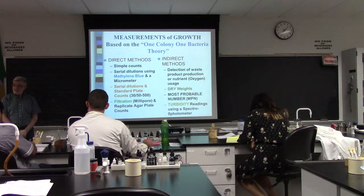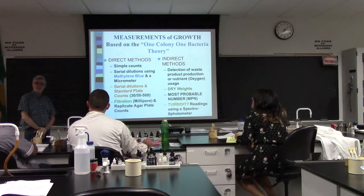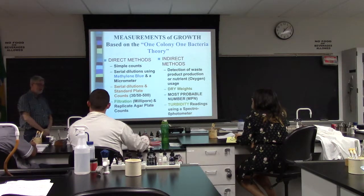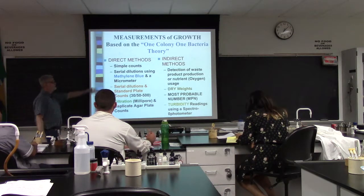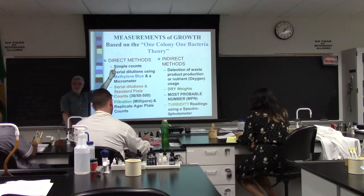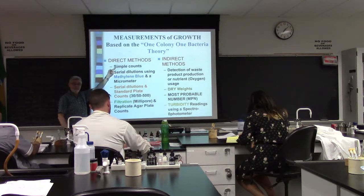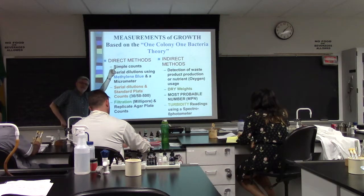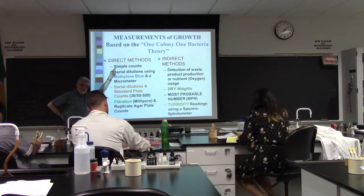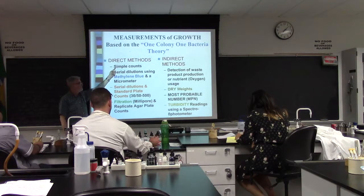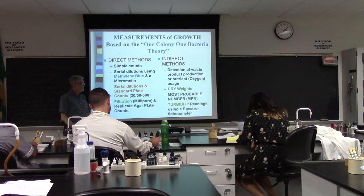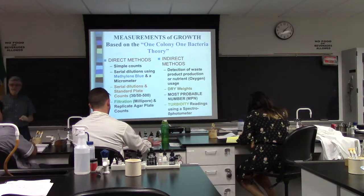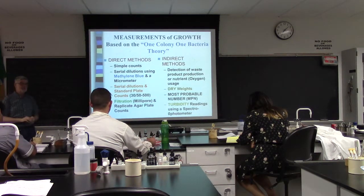I can't think of any reason anyone would ever use simple counts — maybe to see if your bacteria is dead. The next one answers: which direct counting method would you use if you need to know now in a production factory? It's called serial dilution using methylene blue and a micrometer. Serial dilution means you take a sample, take one mil out and put it in nine mils of sterile saline, mix, and repeat four times — getting down from 50,000 to about 50. Almost all counting methods involve serial dilutions first.